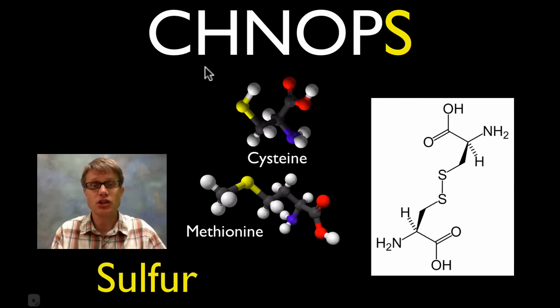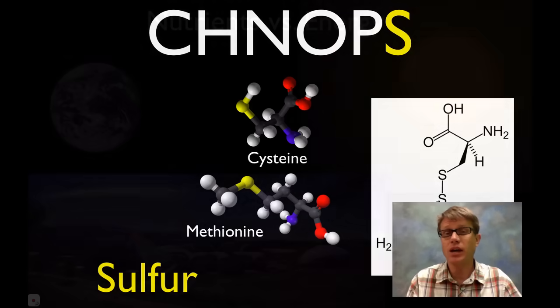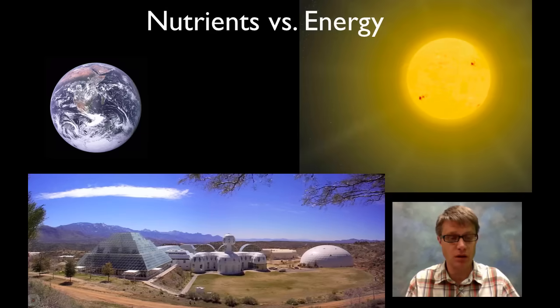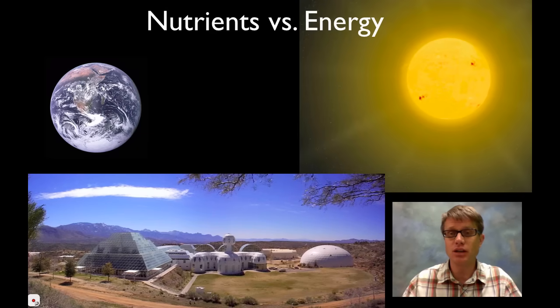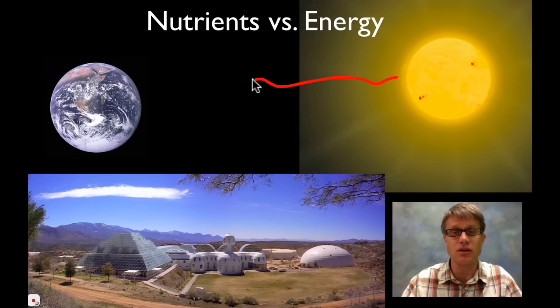And so CHNOPS is a good way to remember all the things that we need. And again we need them for various reasons, and so we have to get them from our environment. Because if you think about energy — how does energy get from the sun to the earth?